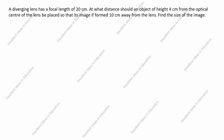What is given in this question: diverging lens means concave lens. Focal length is 20 centimeters — for a concave lens, focal length is always negative, so f = -20 cm. Object height ho = 4 centimeters. Image is formed 10 centimeters away from the lens, so v = -10 centimeters.